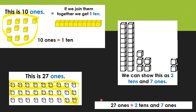So 27 ones is equal to — and equal to means the same as — two tens and seven ones. Did you get that? Well, let's do a bit more.